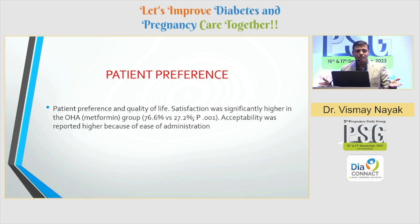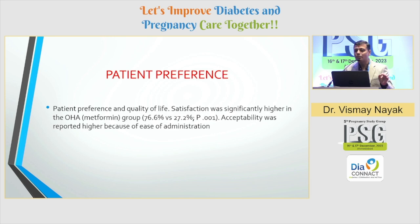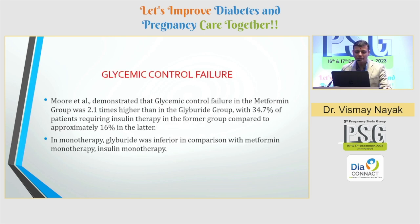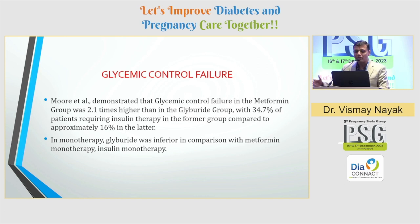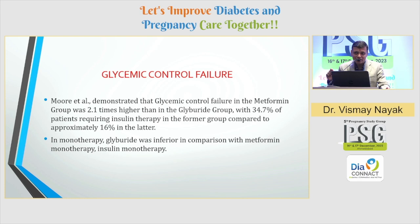What about patient preference? This is very straightforward — the majority of patients preferred OHAs over insulin; acceptability was higher because of the ease of administration. But very importantly, glycemic control failure was more in the metformin group compared to the glyburide group. Patients on metformin were almost 2.1 times more likely to require insulin over time. In monotherapy, glyburide was inferior in comparison with metformin monotherapy or insulin monotherapy.